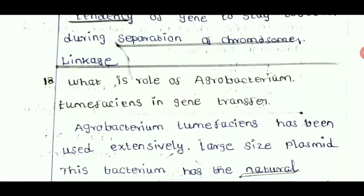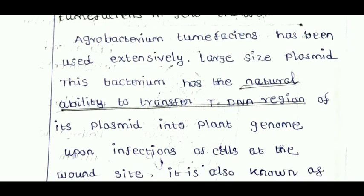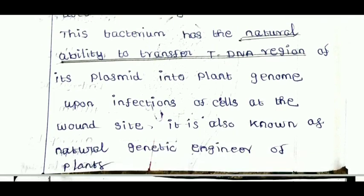What is the role of Agrobacterium tumefaciens in gene transfer? Agrobacterium tumefaciens has been used extensively — it has a large-size plasmid. This bacteria has a natural ability to transfer the T-DNA region of the plasmid into the plant genome upon infection of cells of the wound sites. It is also known as a natural genetic engineer of plants. Agrobacterium tumefaciens — we have to call it a genetic engineer plant.